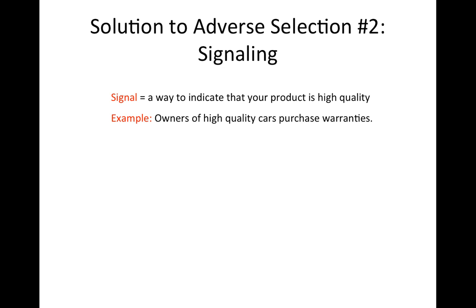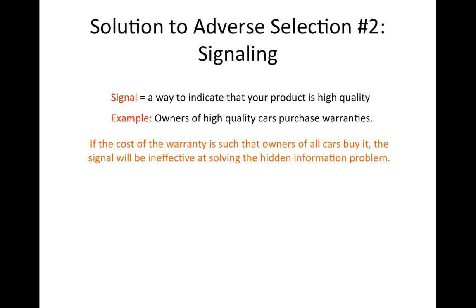Signaling does not always solve the hidden information problem. If the cost of the signal is such that owners of both high-quality and low-quality products buy the warranty, then buyers will still be unable to distinguish quality and the hidden information problem will remain unsolved. In such a case, we say that there is a pooling equilibrium.